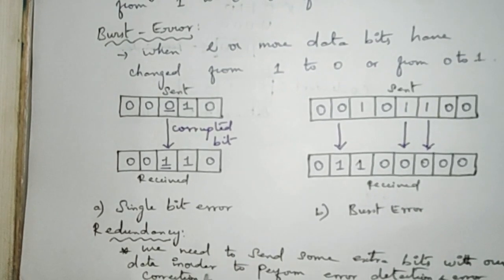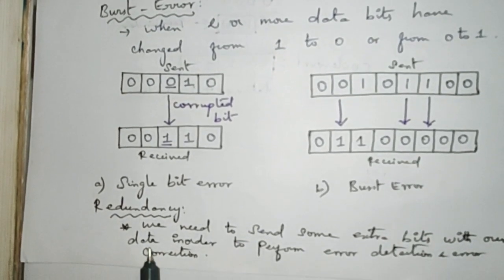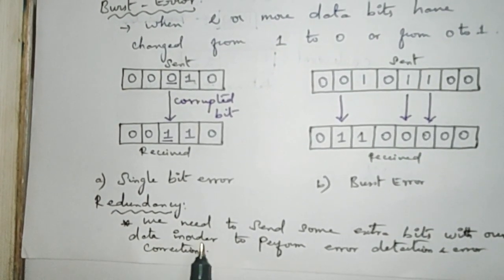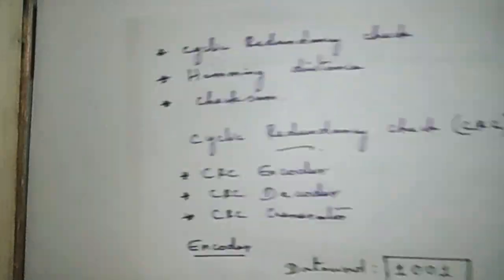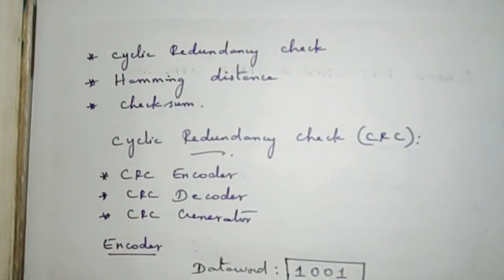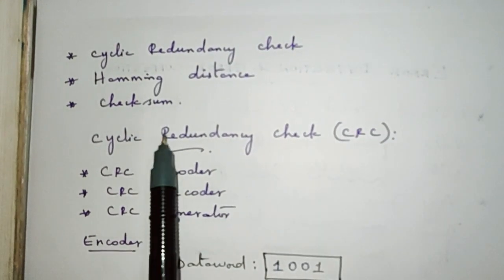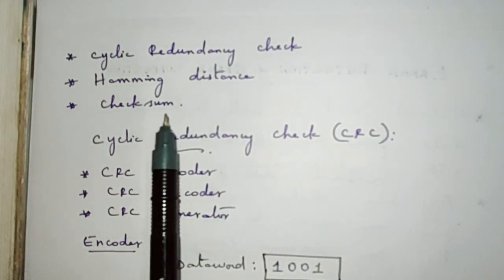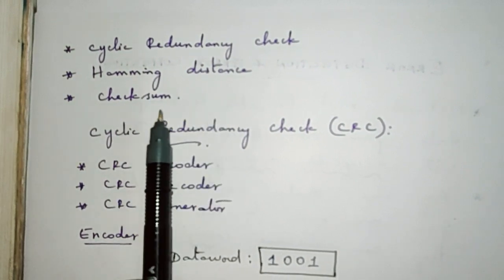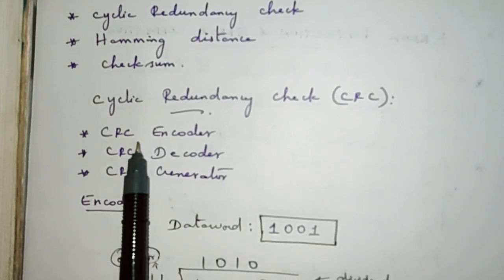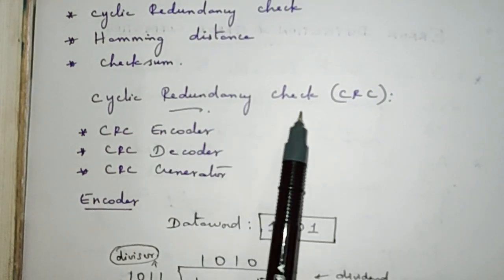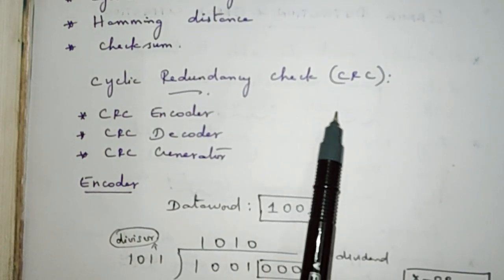One more terminology we need to know in networks is redundancy. We need to send some extra bits with our data in order to perform error detection and error correction. The mechanisms to perform this include cyclic redundancy check, Hamming distance, and checksum. In this video we are going to see about the cyclic redundancy check, also called the CRC mechanism.